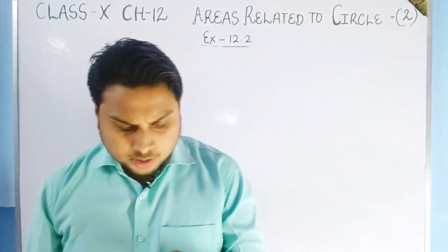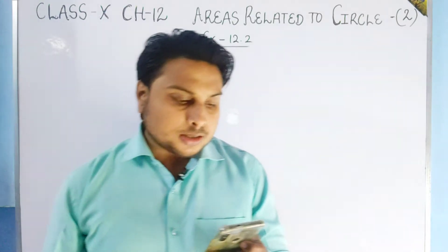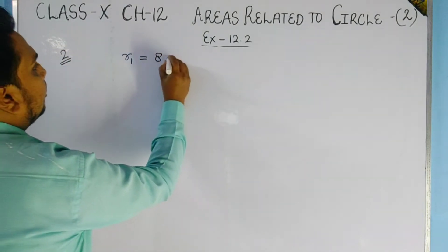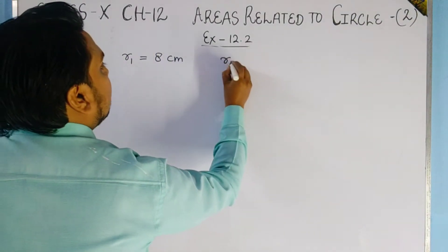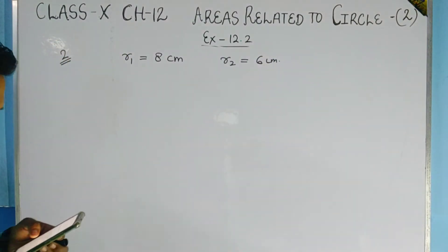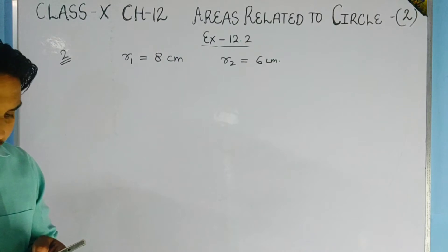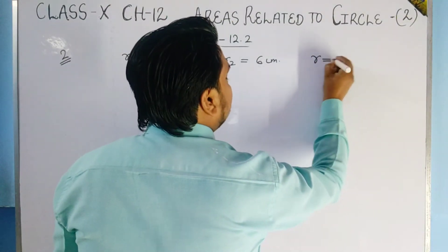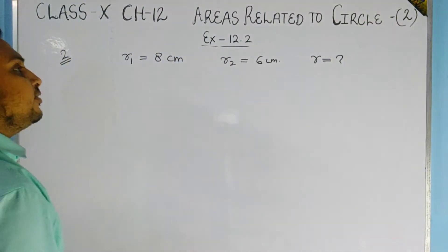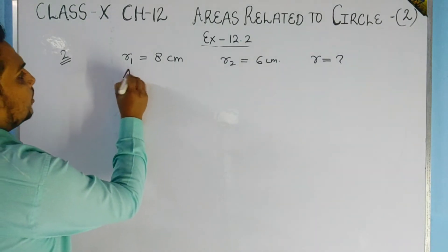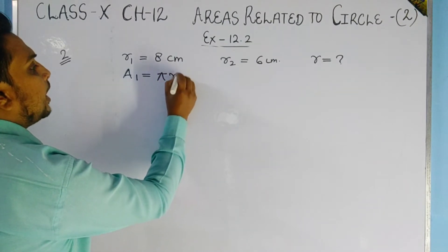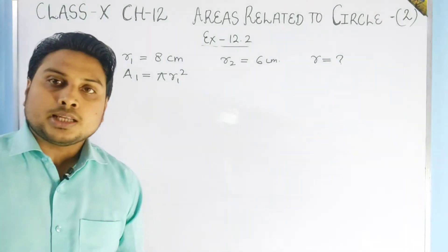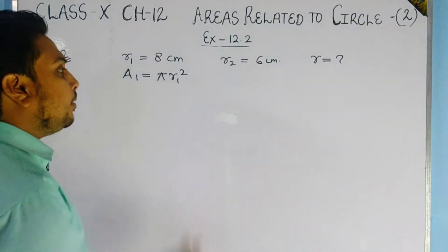Question two: The radii of two circles are 8 centimeter and 6 centimeter. We have to find the radius of the circle whose area is equal to the sum of the areas of these two circles. The area of the first circle is A1 = πR1², the area of the second circle is A2 = πR2², and the area of the required circle is A = πR².